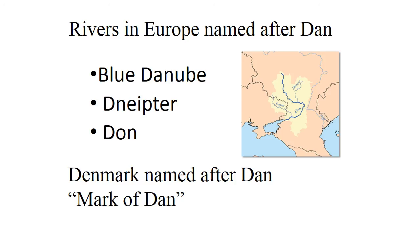The word Denmark comes from the Mark of Dan, and this would be the area the people of Dan settled, as well as Ireland. Many of the rivers in Europe are named after Dan — you have the Blue Danube, the Dnieper River, the Don River, and Denmark itself gets its name from Dan.